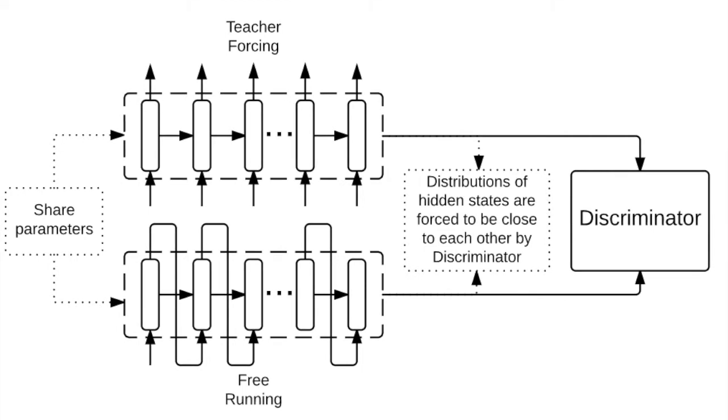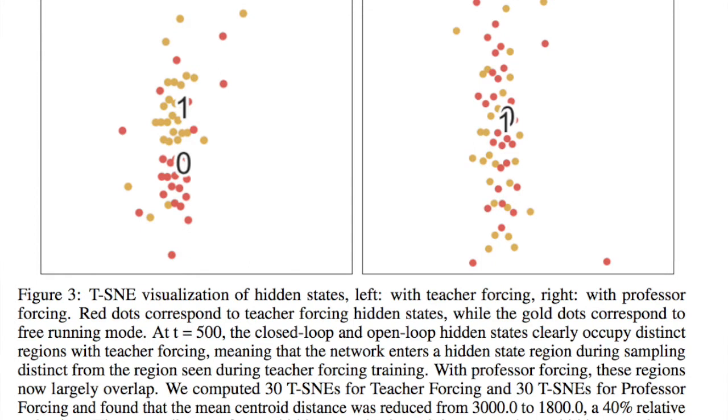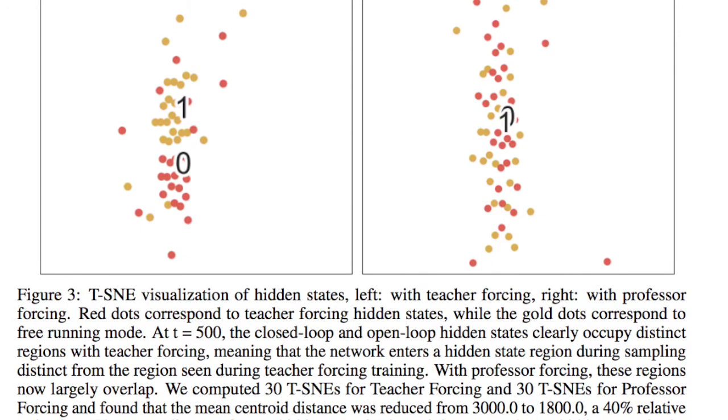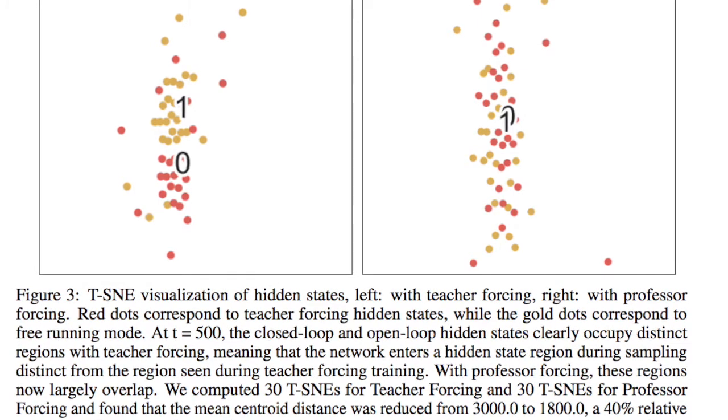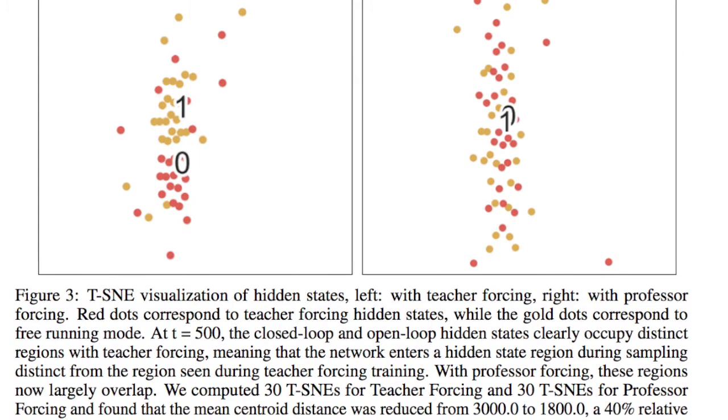Empirically, we find that Professor Forcing acts as a regularizer, improving test likelihood on character-level Penn Treebank and sequential MNIST. We also find that the model qualitatively improves samples, especially when sampling for a large number of time steps. This is supported by human evaluation of sample quality.